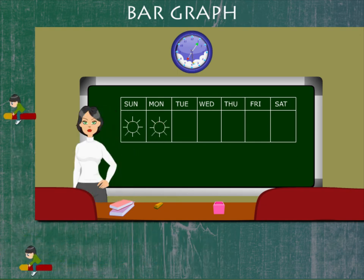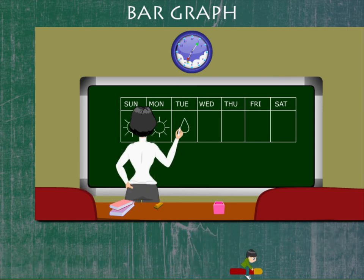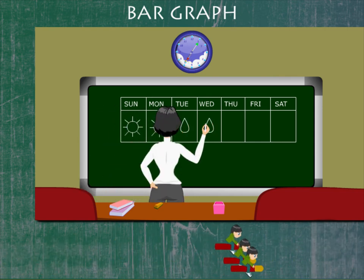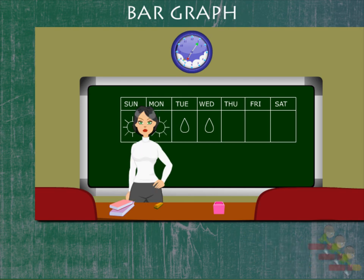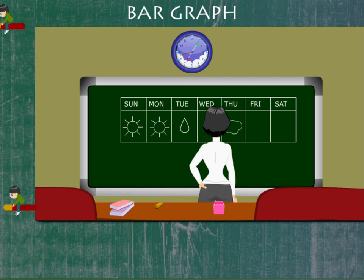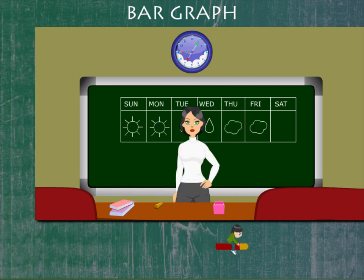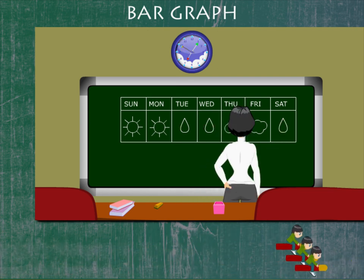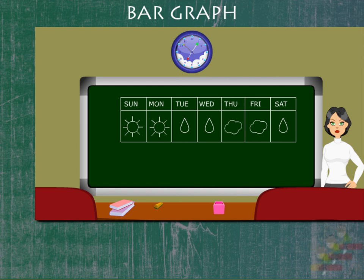Monday is also sunny. It rained on Tuesday and Wednesday. It was cloudy on Thursday and Friday. And it rained again on Saturday.